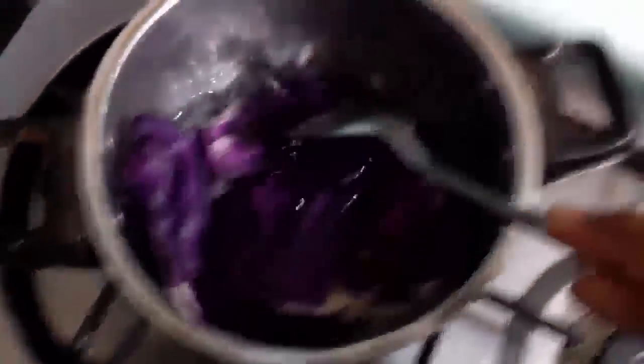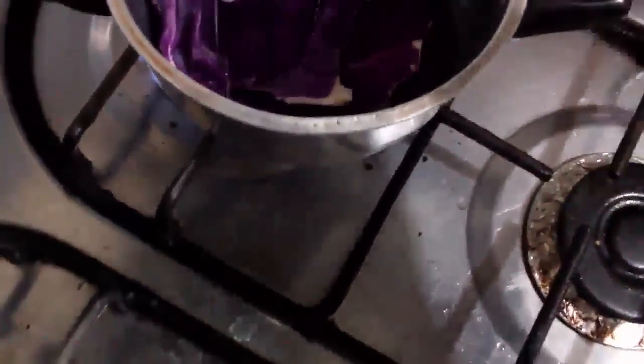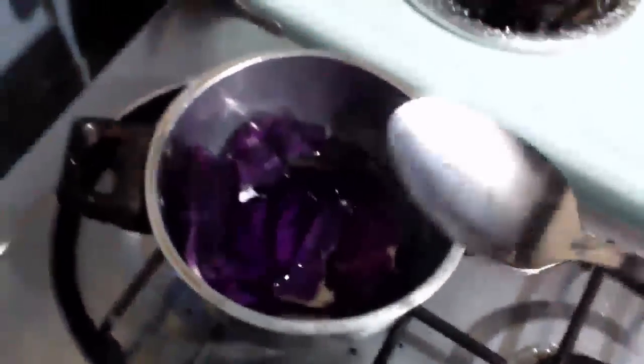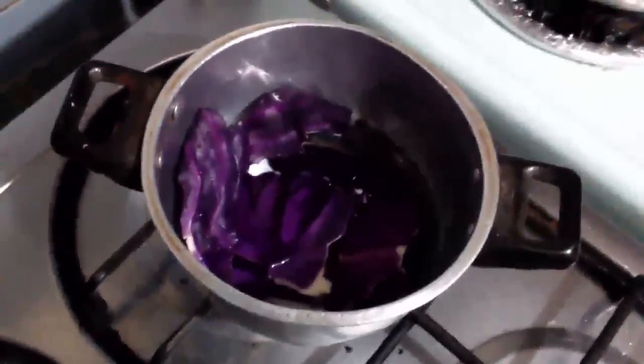Eventualmente podemos mover de vez en cuando las hojas de repollo morado con una cuchara al interior del agua. Después de un tiempo que se haga el calentamiento, el agua va a obtener una tonalidad morada como la que vemos aquí.